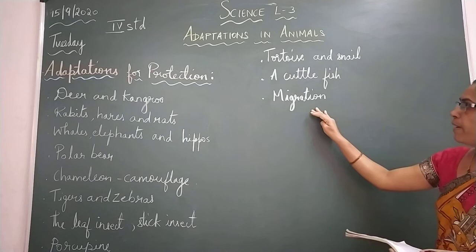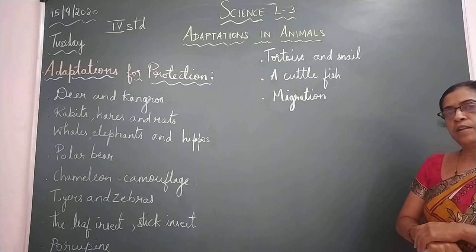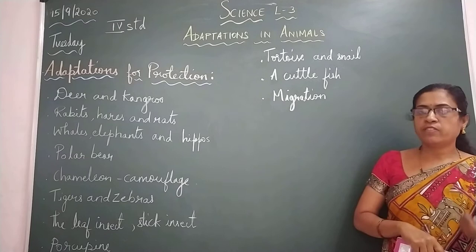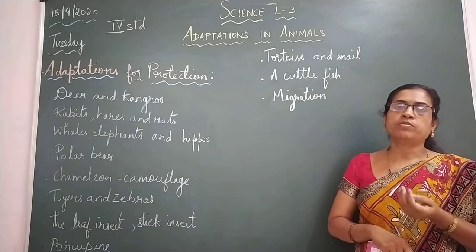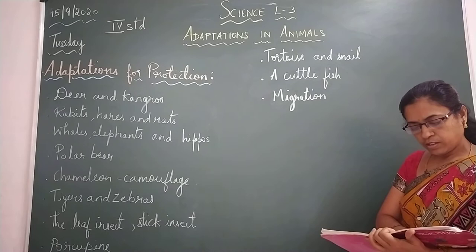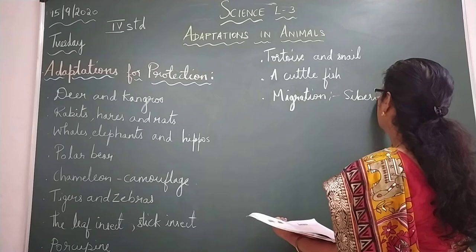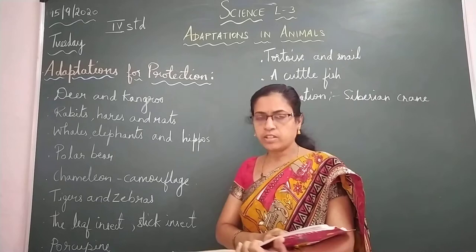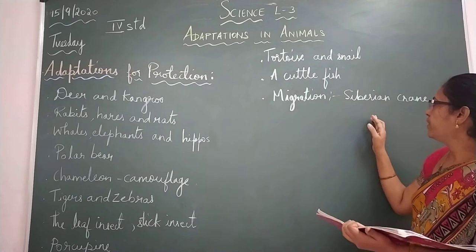Next is migration. Migration is the regular movement of some birds and animals in large numbers to escape from unfavorable conditions at a particular time of year. These animals and birds migrate from one place to another. For example, the Siberian crane comes to India every year in winter, traveling a very long distance.